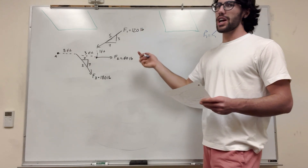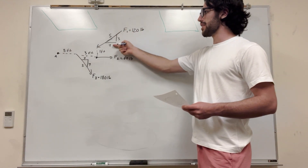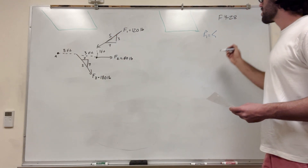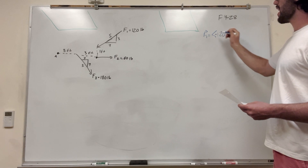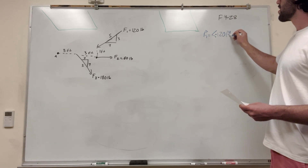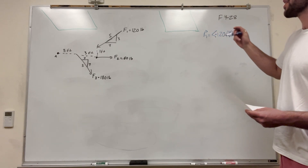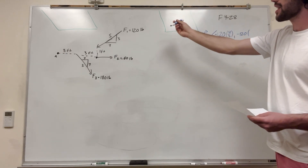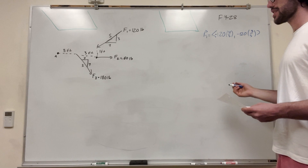So it's going in the x direction. The x is going negative, and there's a ratio of 4 to 5 in the x to the hypotenuse. So we're going to take the hypotenuse 120, make sure the negative is there, and then multiply by 4/5. And it's also going negative in the y direction, so it's going to be negative 120 times 3/5. That's Force 1 written as a vector.